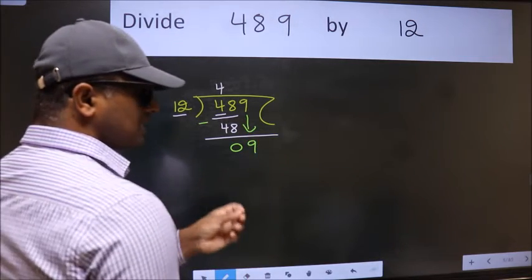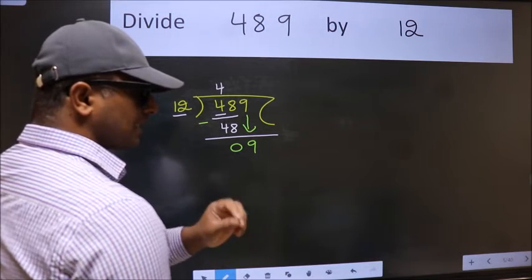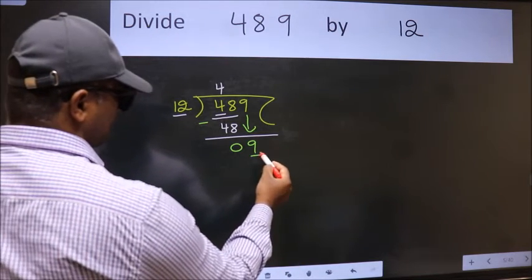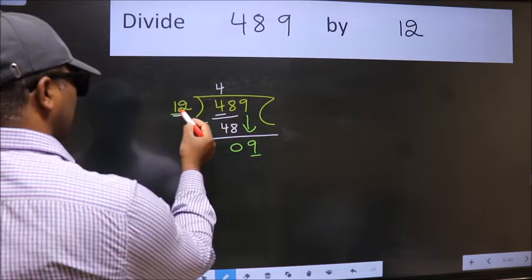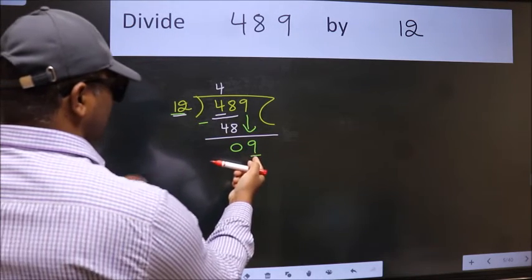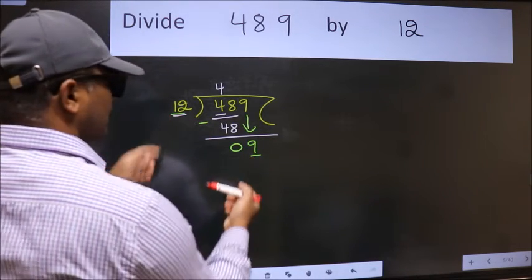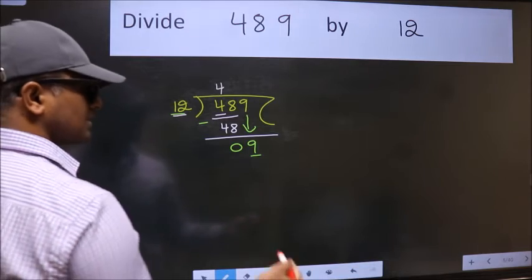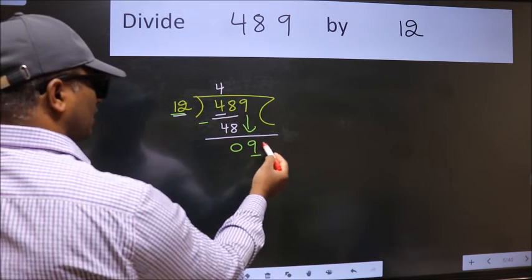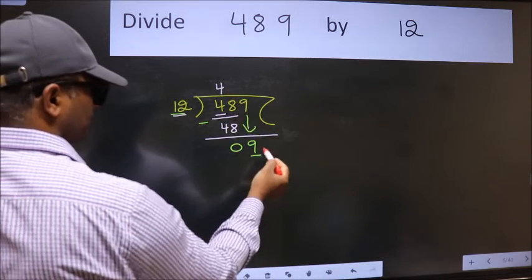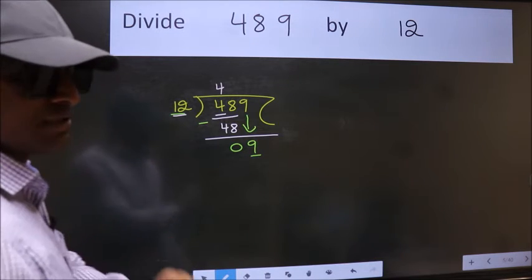After this step, the mistake happens. And the mistake is this: here we have 9 and here 12. 9 is smaller than 12. So what many do is they directly put a dot and take 0, which is wrong.